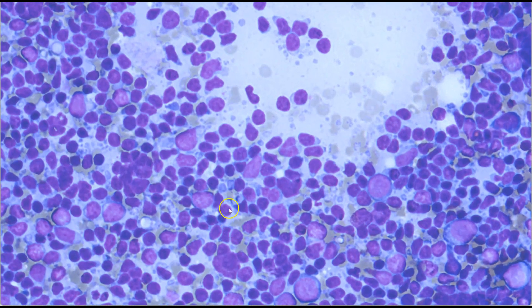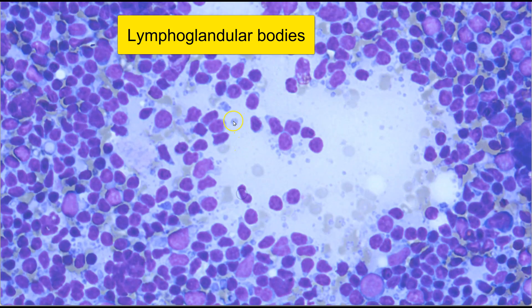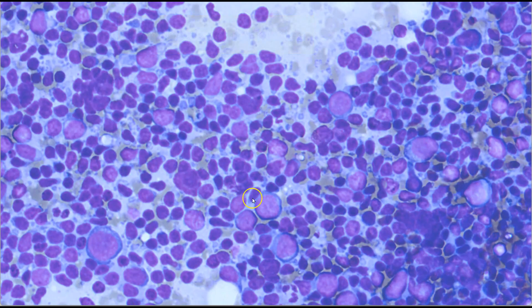I also want to highlight the presence of lymphoglandular bodies, as you can see here and here, as well as a few smaller ones here surrounding the lymphoid cells. These are a very useful indicator that we are dealing with a lymphoid lesion. They do not differentiate between reactive or benign lymphoid cells versus malignant lymphoid cells, but they are a good indicator that we are likely dealing with a lymphoid lesion.